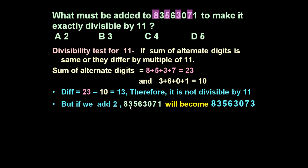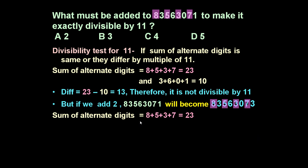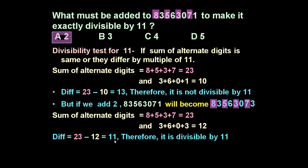So if we add 2 to the number 83563071, the last digit changes and it becomes 83563073. Now the sum of alternate digits 8, 5, 5, 3, and 7 remains 23, but the sum of the other alternate digits 3, 6, 0, and 3 becomes 12. Their difference becomes 11, making the number divisible by 11.